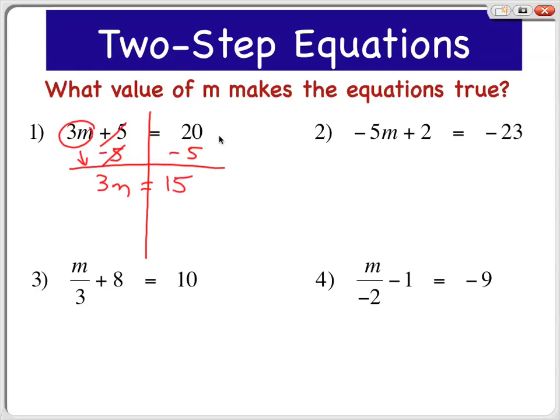Now obviously we're not done, m is not all by itself. It says 3m equals 15, so we're going to divide both sides by 3. 3 divided by 3 leaves me with 1m, and m equals 15 divided by 3 is 5.